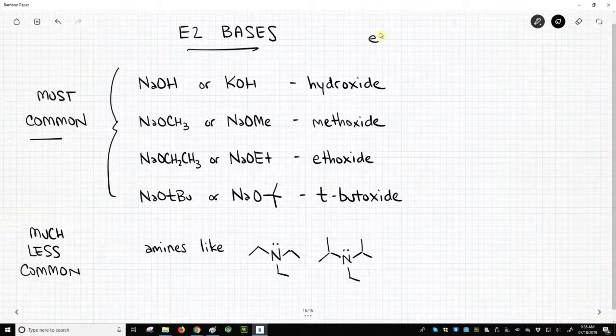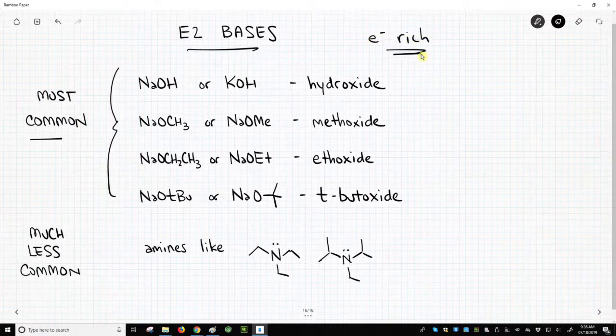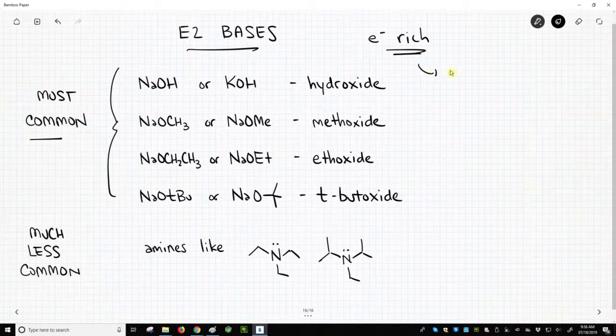They are always electron-rich. How can you tell something's electron-rich? Almost all electron-rich things are anions.